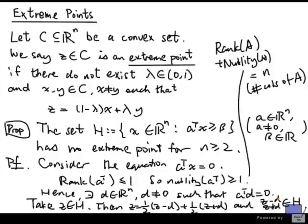They are in H because, well, if you plug in A transpose z minus d, for example, that's simply A transpose z minus A transpose d. But A transpose d is 0, so this is just A transpose z.